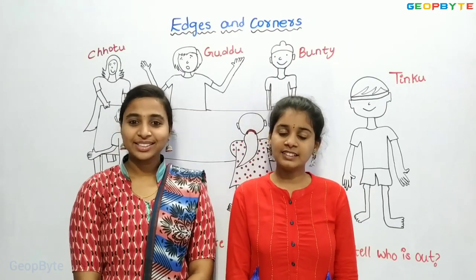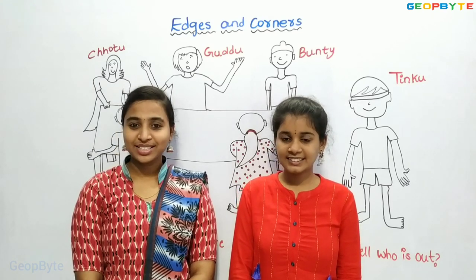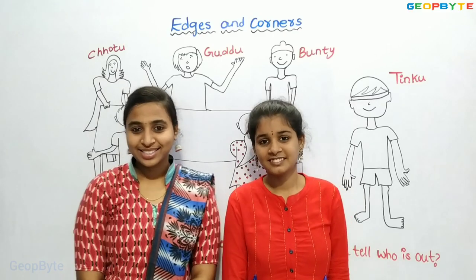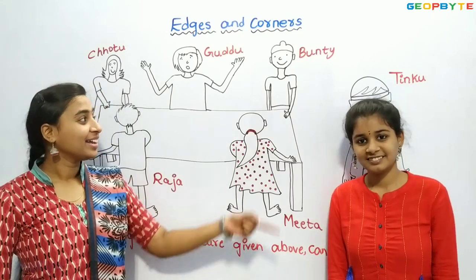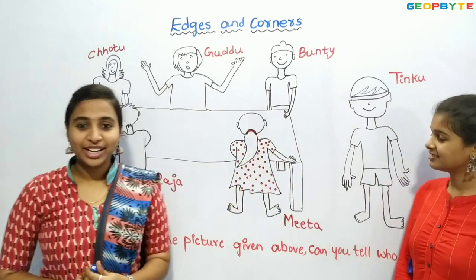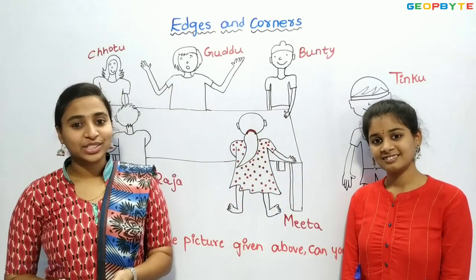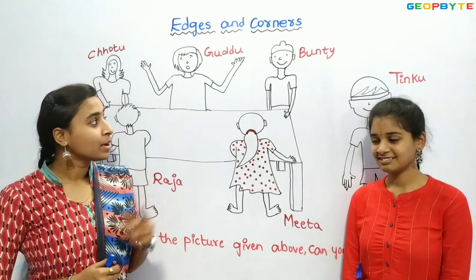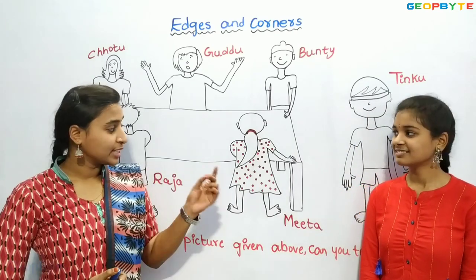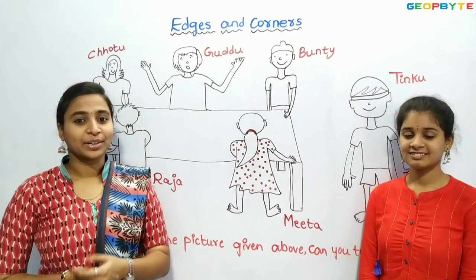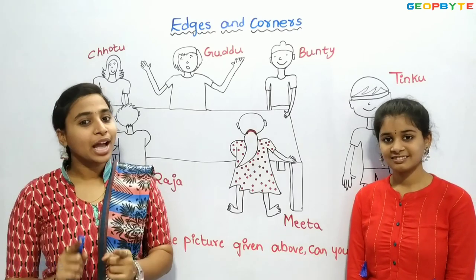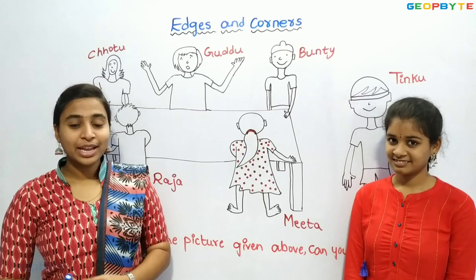Now let us get into the topic: edges and corners. Hey kids. Meeta and her friends were playing a game. Tinku was blindfolded and asked to clap as long as he wished. Till that time his friends were moving around the table. The moment when he stopped clapping, his friends stopped wherever they were. Now the child who is not at the corner would be out.